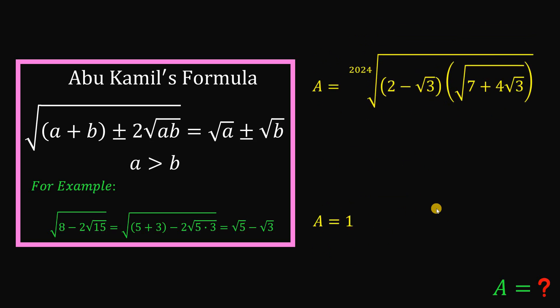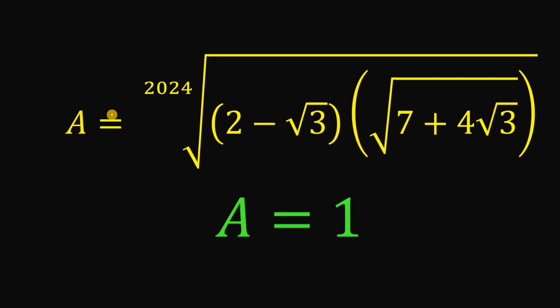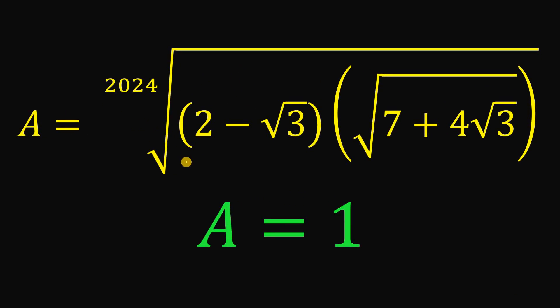Therefore, our answer to this question, what is the simplest form of this A, 2024 root of the quantity 2 minus root 3 multiplied by the quantity square root of 7 plus 4 times square root of 3, then the answer is simply equivalent to just 1. And as always, we are done.